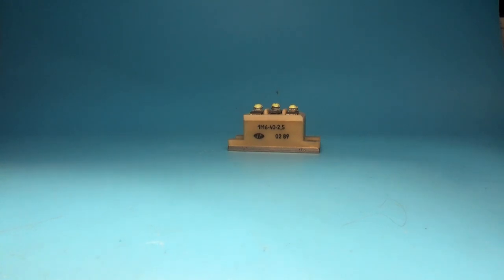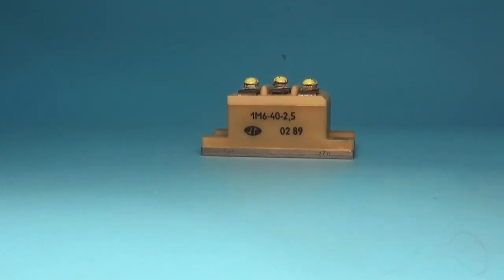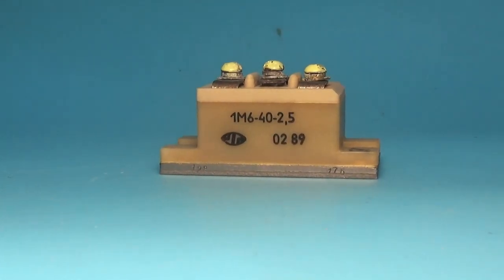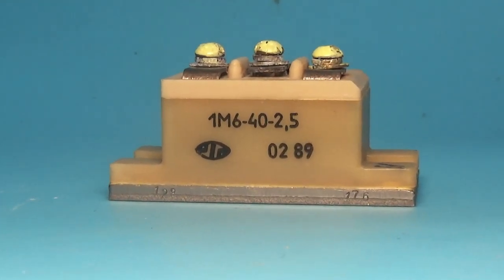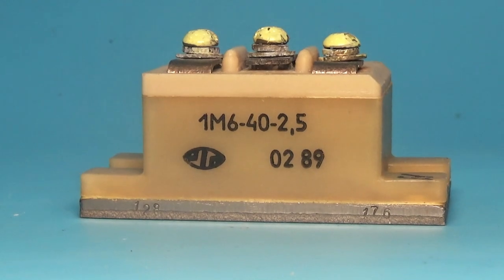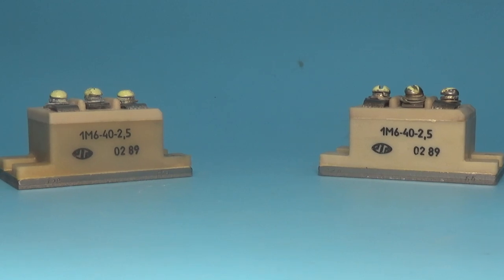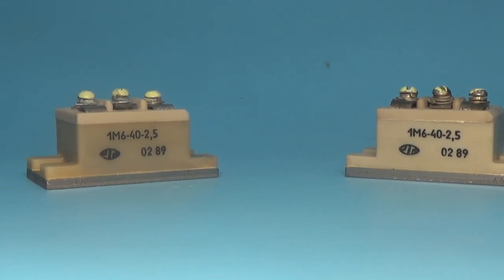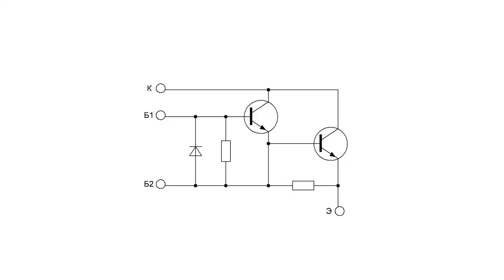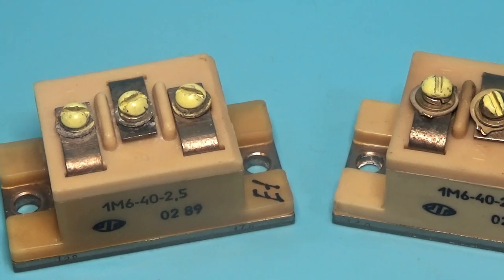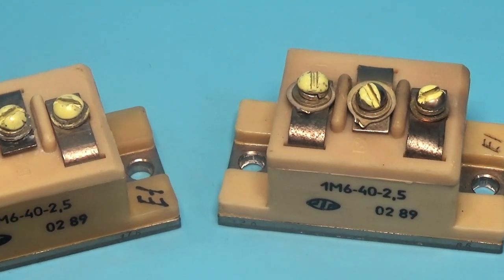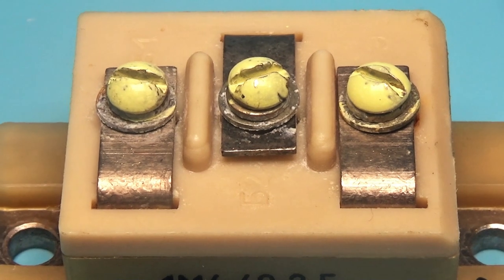Transistor module 1M6-40-2.5. In fact, it is an analog of MPTKD-40-2.5. This is a composite transistor. It is clear from the marking that it is for 40A 250V. Empirically, I found the gain of this transistor and it was about 100, which is already good.